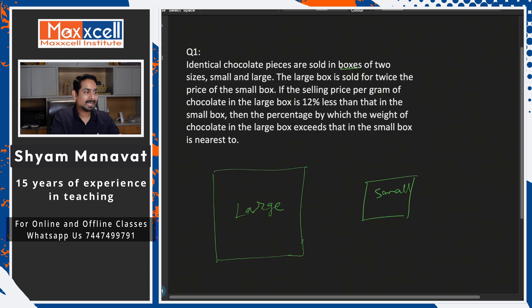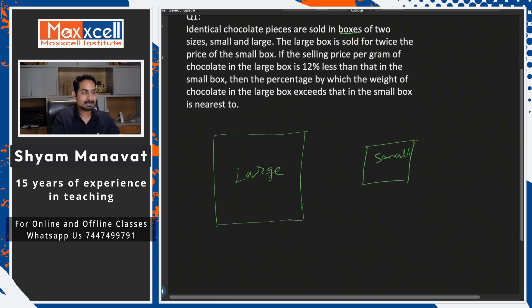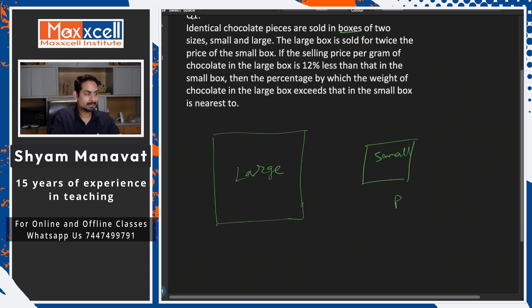The large box is sold at twice the price. So price-wise it is double. If the price is P here, this price is 2P. If the selling price of that is how you should read, you should keep reading and then keep marking so that things will be easy for you.